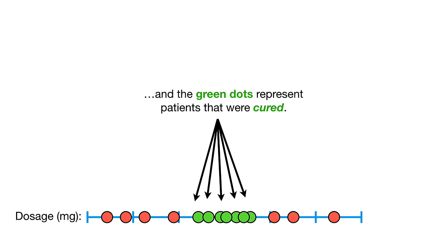The support vector classifier can be used to classify new observations. For example, if a new observation had a certain dosage, we could calculate the y-axis coordinate by squaring the dosage and classify the observation as not cured because it ends up on that side of the support vector classifier. On the other hand, if we got a new observation with a different dosage, we would square the dosage and classify it as cured because it falls on the other side.